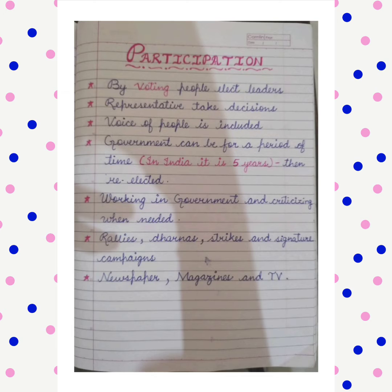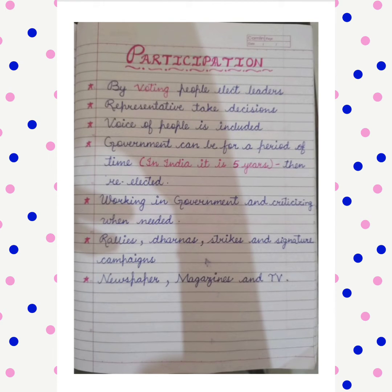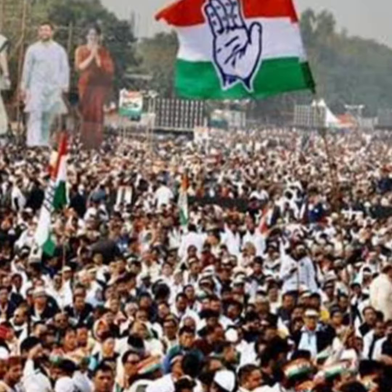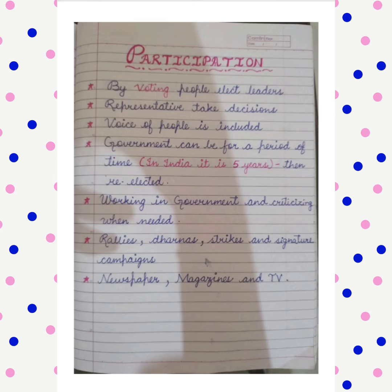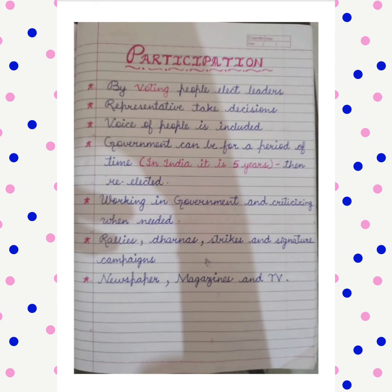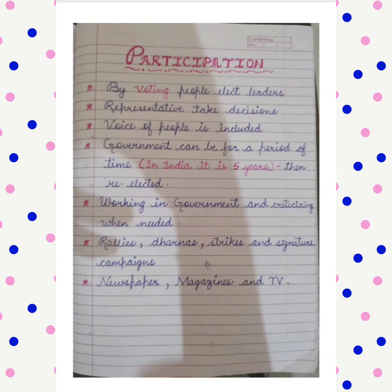So what are we trying to do under participation? We are trying to participate by taking an interest in the working of the government and by criticizing it when required. There are many ways in which people express their views and make the government understand what action they should take. These include Dharna, rallies, strikes, signature campaigns, etc. Things that are unfair and unjust are also brought forward. Newspapers, magazines and TV also play a role in discussing government issues and responsibilities. People can also participate by organizing themselves into social movements that seek to challenge the government and its functioning.